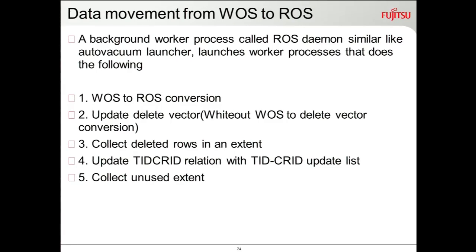Data movement from WOS to ROS is handled by a background worker which performs: WOS-to-ROS conversion, updating the delete vector, collecting deleted rows in an extent for garbage collection, and updating the TID-to-CRID relation, which maps data present in the main relation to data present in the columnar store.